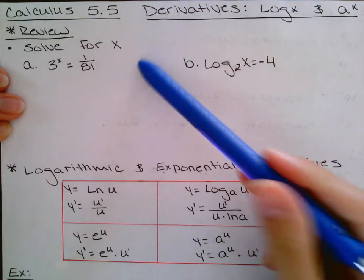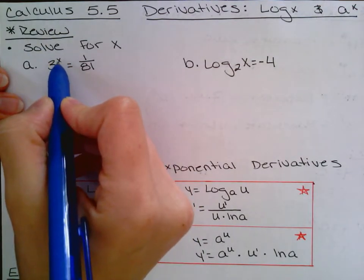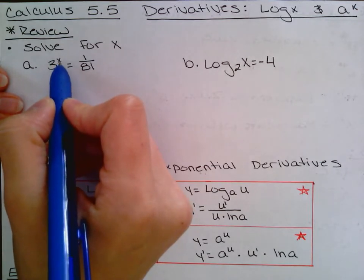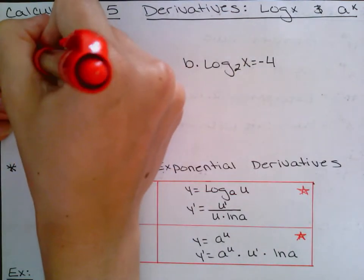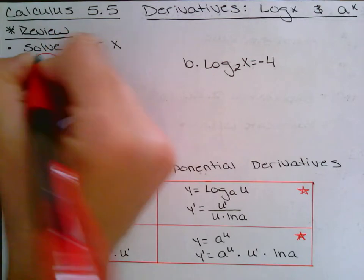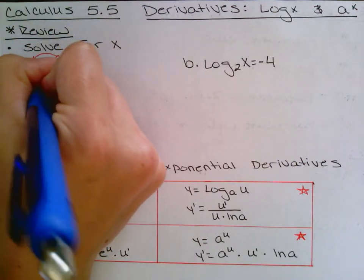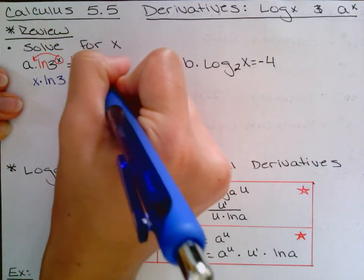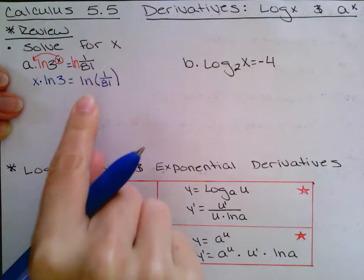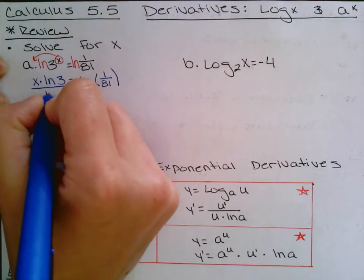Before we go to those derivatives, let's do two quick practice problems on solving. Remember, anytime you see an exponential function — the function up in the exponent — the way to get it out from up there is to apply an ln to both sides. You can apply a log, it's just a little lengthier to write. So I'm going to apply an ln so that this can move to the front, and whatever I do to one side I must do to the other. So I can say x times ln of 3 equals ln of 1 over 81. We're just solving, so do not feel like you have to expand — as long as you get x by itself you're done. I'm going to divide both sides by ln of 3.